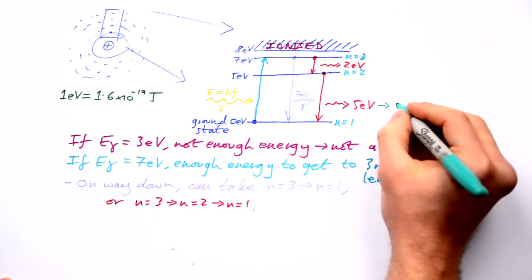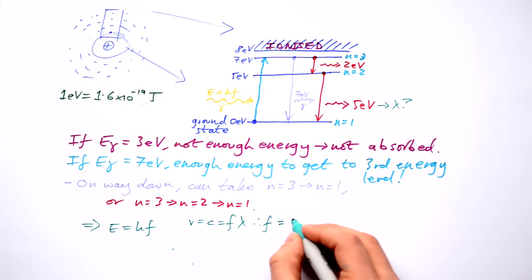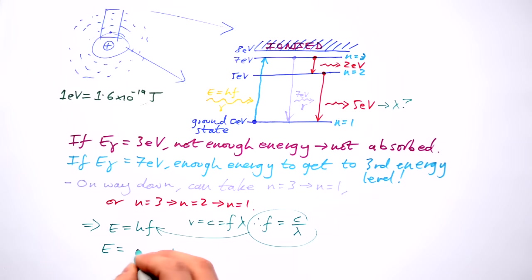What about if I wanted to find out the wavelength of this photon here? Let's have a look. We know that the energy of a photon equals HF. From the wave equation, we know the V or C is F Lambda, the frequency times wavelength. So that means that frequency equals speed of light divided by the wavelength. Pop this in here.